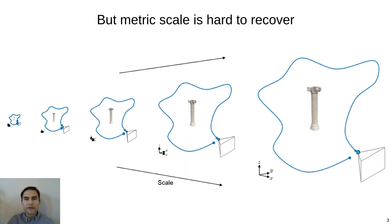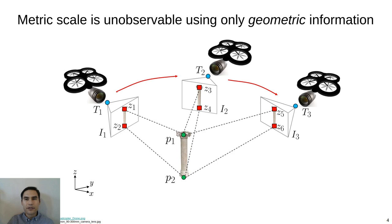However, metric scale is difficult to recover. The traditional formulation of the monocular SLAM problem is ill-posed in that multiple solutions are valid at different scales without external information. In fact, when only the geometric content of the images is used for SLAM, the metric scale of the solution is fundamentally unobservable.